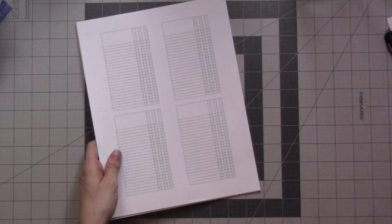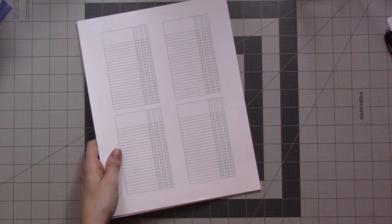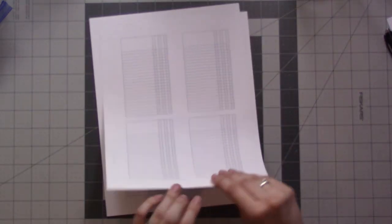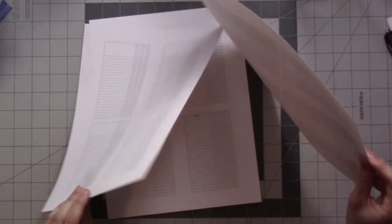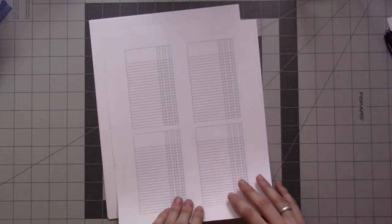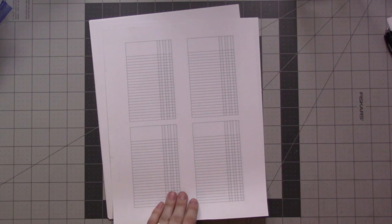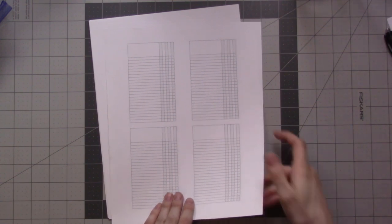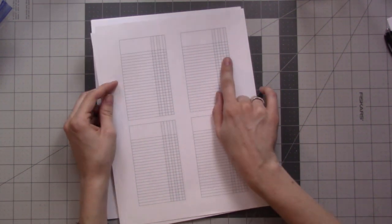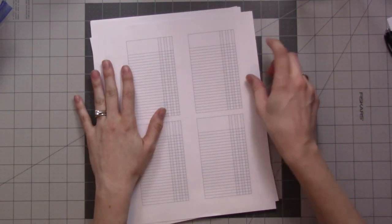First up, this one here I printed out two copies front and back, is the categorized list. This one is number 117. It comes with two different versions - one just has three columns and this one has five.